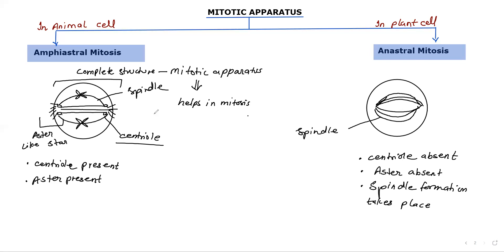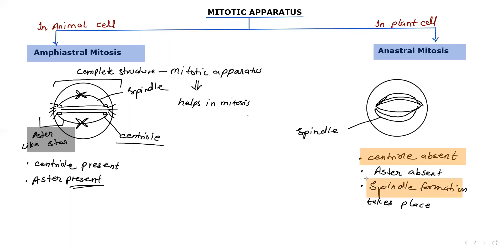So to summarize: the aster is present only in animal cells. Mitosis where aster formation takes place is called amphiastral mitosis, and this occurs only in animal cells, not in plant cells. In plant cells, the centriole is absent, so only spindle formation takes place without the aster. Because of this spindle formation, cell division still occurs in plant cells.